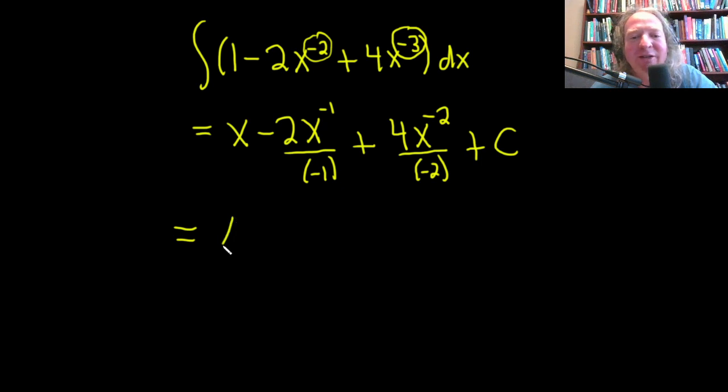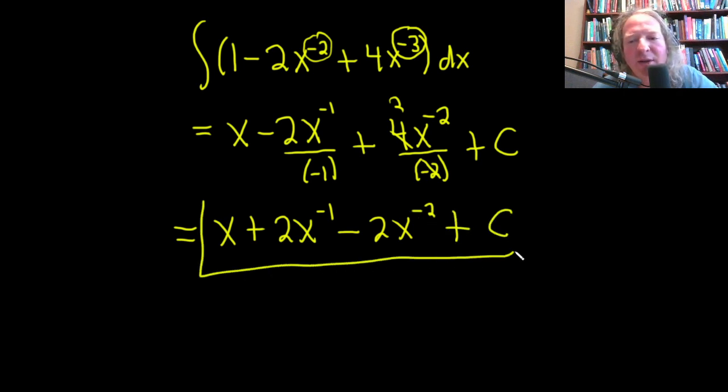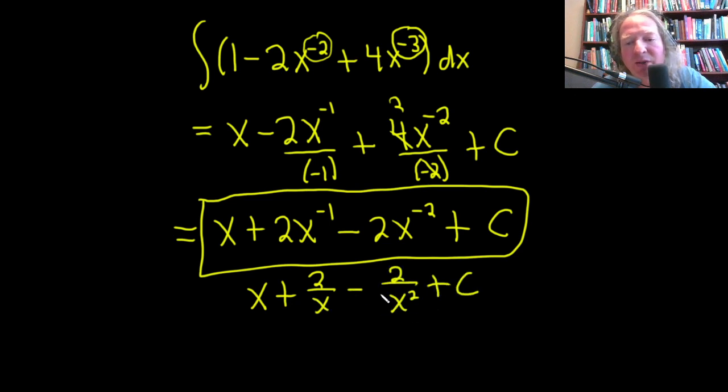These will become positives. This is x plus 2x to the negative 1 minus 2x to the negative 2, and then plus our constant of integration, capital C. You could leave it like this or you could bring the x's down if you want. You could write it like x plus 2 over x minus 2 over x squared plus c. Personally, I prefer this. I think it's a much simpler answer.